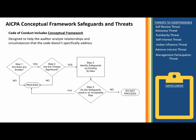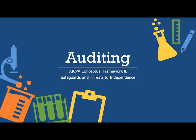What safeguards help us avoid these threats? There's legislation and regulations, plus the profession itself puts out guidelines for firms to follow. The audit firm can also implement procedures, processes, or personnel changes to avoid threats. The audit client itself can move people around and have procedures to ensure threats don't occur. The audit firm and client may work together to eliminate some of these threats.